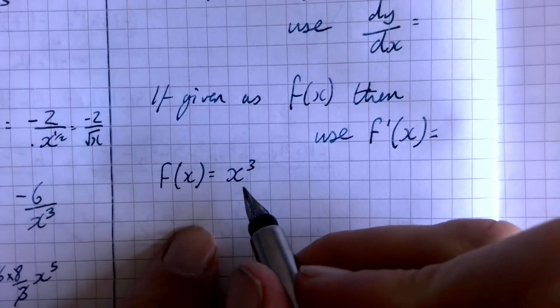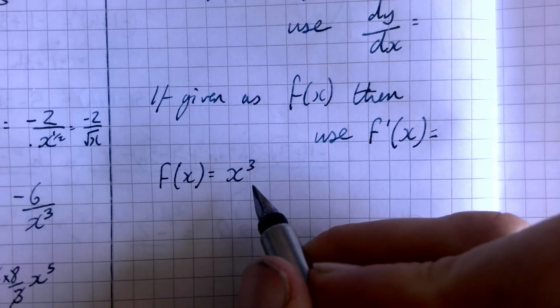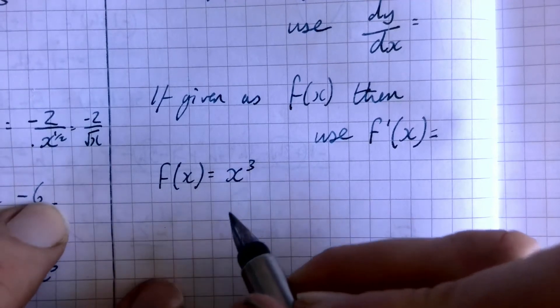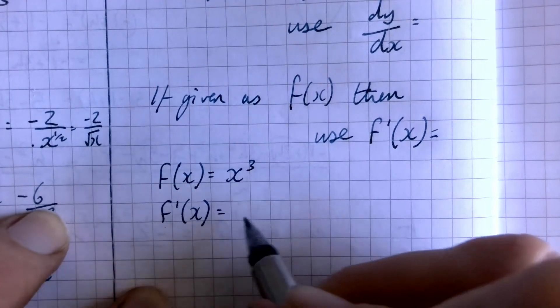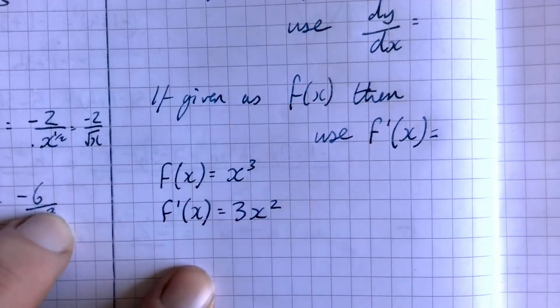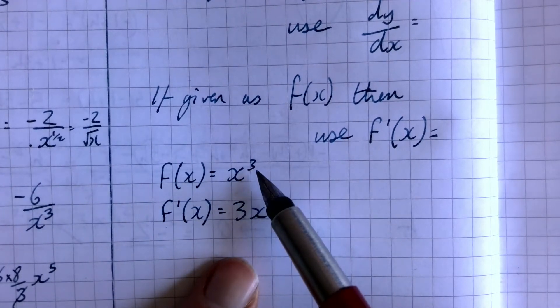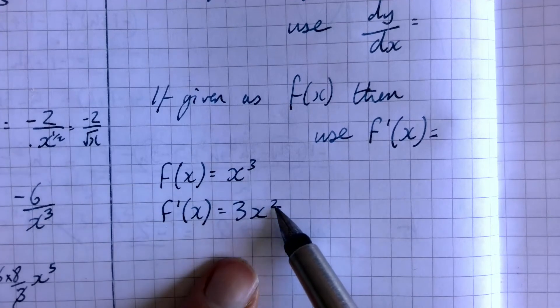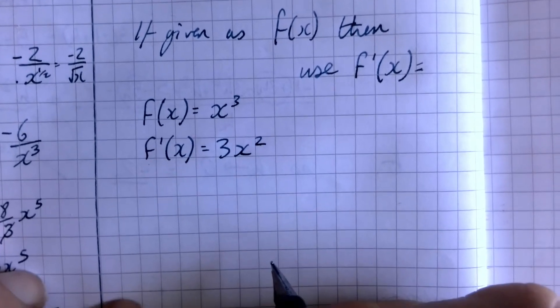Right now, if you remember yesterday, we were looking at this function, which equals x cubed, and we found that the derivative by first principles was 3x squared, which we would write as this, 3x squared. And what we're going to be looking at is the fact that we could have just got that by saying the power we multiply by at the front, and then the power drops by one there. So we've got one little rule that we're going to be following.